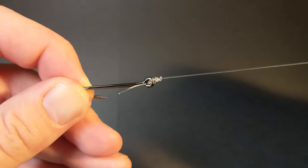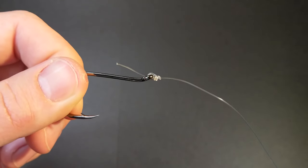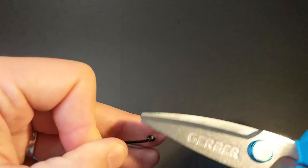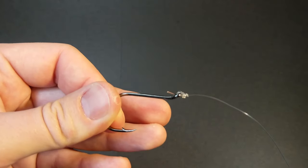And there you have it, your Trilene Knot. Once you have the knot tightened up, feel free to cut the tag end short. This completes the knot.